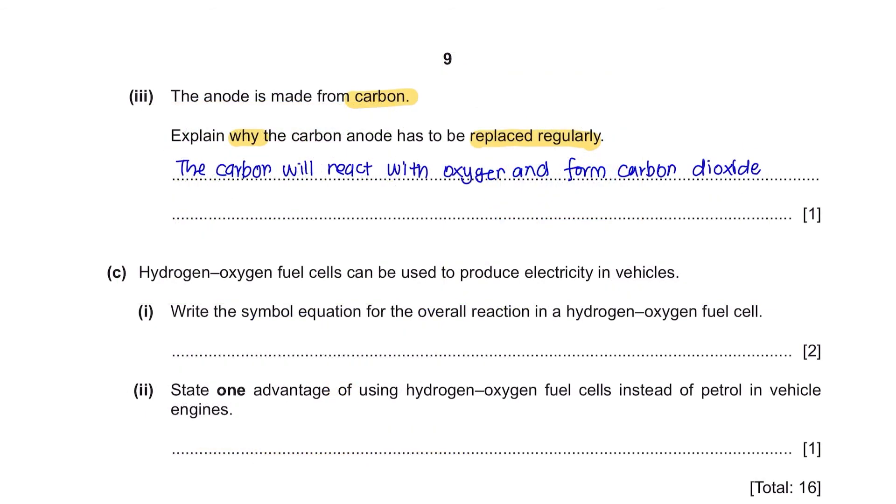Question C. Hydrogen-oxygen fuel cells can be used to produce electricity in vehicles. Part 1. Write the symbol equation for the overall reaction in a hydrogen-oxygen fuel cell. The hydrogen-oxygen fuel cell produces electricity by combining hydrogen and oxygen, releasing energy and water. This will give you one mark.